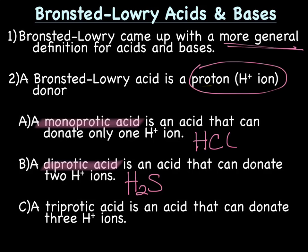And the last type is the triprotic acid, which is an acid that can donate three hydrogen ions. An example could be H3P, hydrophosphoric acid. Those are Bronsted-Lowry's definitions of an acid.